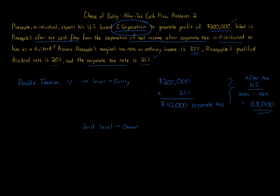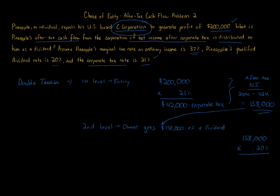$158,000 gets distributed to the owner, Pineapple, as a dividend. We're told in the problem that a special dividend rate applies, so we take the $158,000 dividend and multiply it by 20%, which gives us our tax amount on this dividend — that equals $31,600.